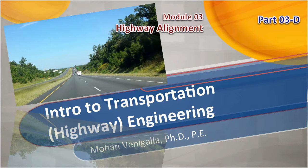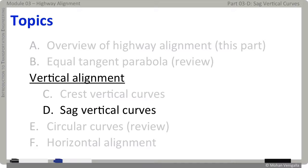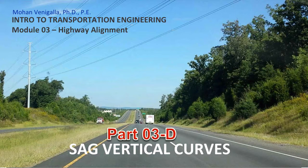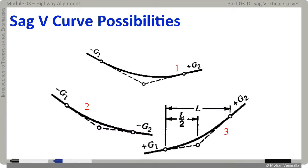Welcome back to our continuing coverage on highway alignment. We are now into part 3D, and that 3D is all about alignment of sag vertical curves. Just as in the case of crest curves, there are three possibilities in which a sag curve is formed.